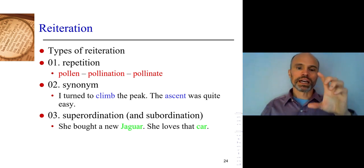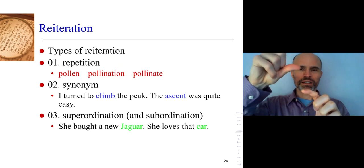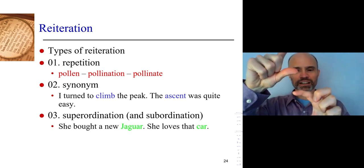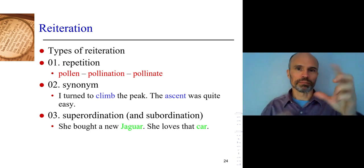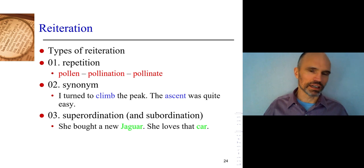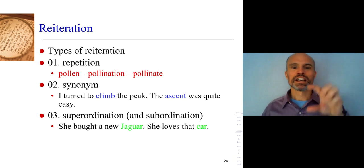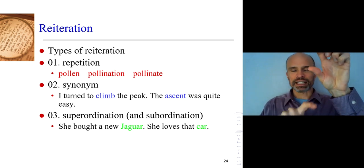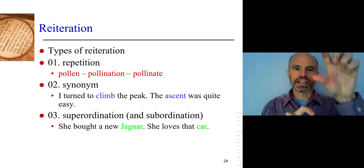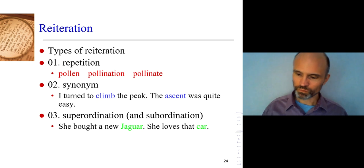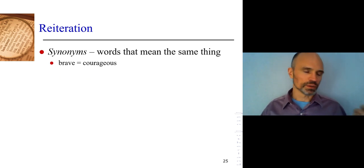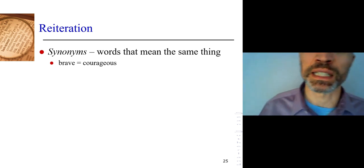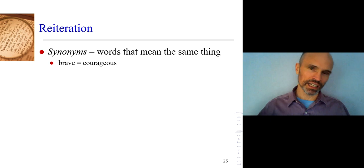So we've covered repetition — just saying the exact same word again, or changing it a bit like adding an S: teacher, teachers, teaches, teaching. Synonyms are words that mean the same thing. 'Brave' means 'courageous.' It may be that a dictionary shows some small differences, but for most people these would be synonymous — they'd think of them as meaning the same thing. We're not talking about specialists; for most people, if they saw 'brave' and 'courageous' in the same text, they would see that as a link.